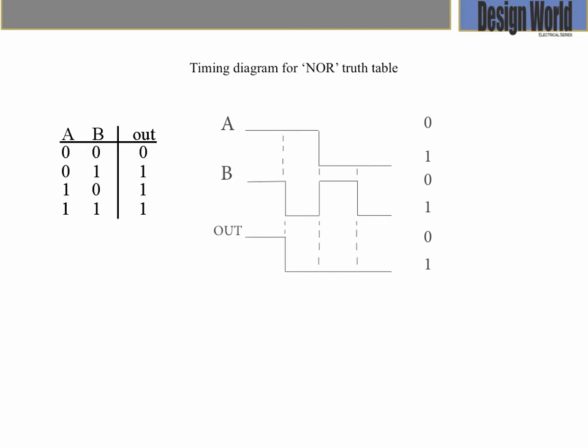For the variable A, you have 0, 0, 1, and 1. For the B variable, you have 0, 1, 0, and 1. The output value shows 0, 1, 1, and 1.